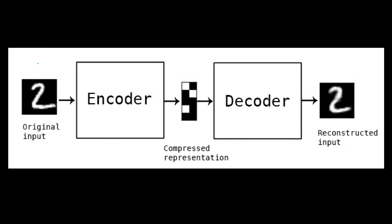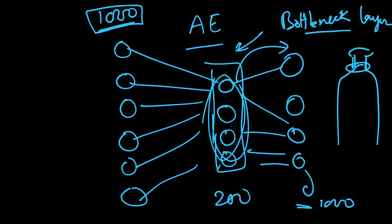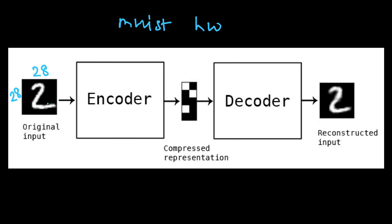In this video we will be using the MNIST handwritten dataset, which is one of the simplest datasets available in almost all deep learning frameworks. The dimension of each image in this MNIST dataset is 28x28. We will not use convolutional layers because we are trying to build the simplest possible autoencoder using a simple neural network. So we have 28x28 = 784 pixels in each image.